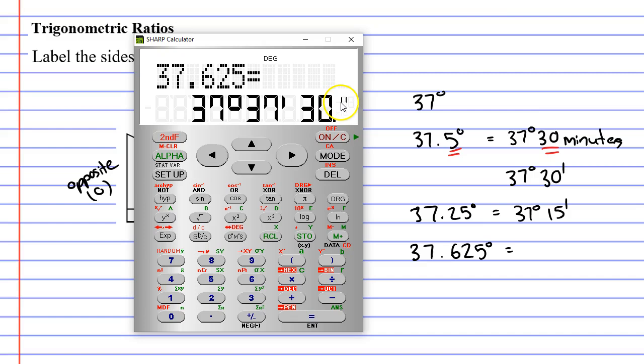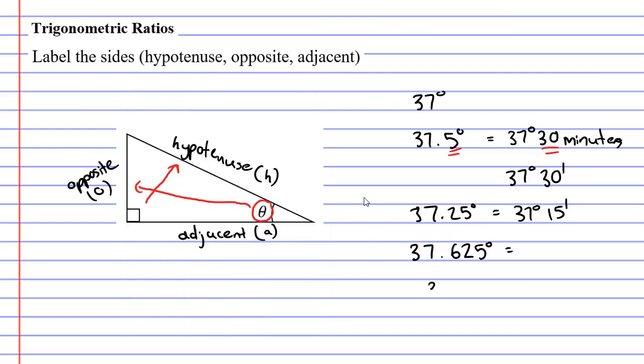You'll notice the seconds has a double apostrophe. So, we'll write that down. 37 degrees, 37 minutes, and 30 seconds.